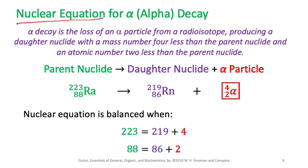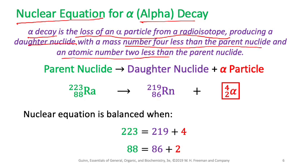Alpha decay is the loss of an alpha particle from a radioisotope, producing a daughter nuclide with a mass number four less than the parent nucleus and an atomic number two less than the parent. For example, Radium-223 (Ra, mass number 223, atomic number 88) undergoes alpha decay after releasing an alpha particle to reach a stable nuclide.